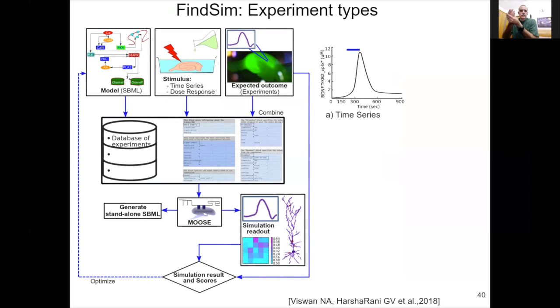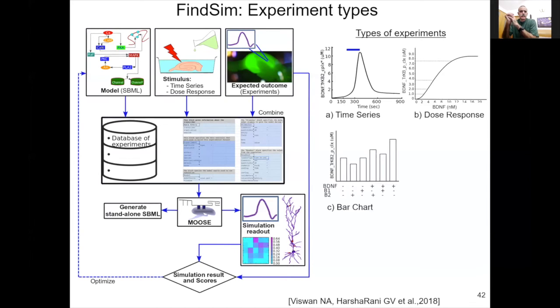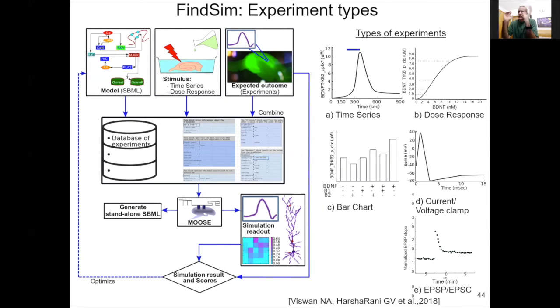I'll just march you through a series of slides. Different kinds of stimuli are possible. You can give time series stimulations. You can give dose response curves, much beloved by biochemists. You can do bar charts where you have different combinations of inputs and outputs. You can do standard electrophysiology, current clamp, voltage clamp. You can even do standard LTP, EPSP kinds of experiments. And all of these can be codified and used to optimize the model.